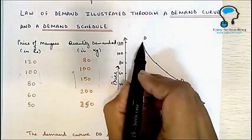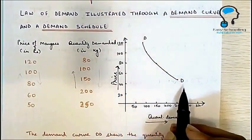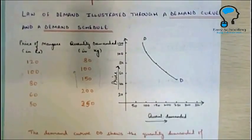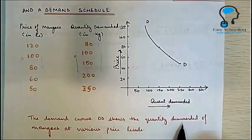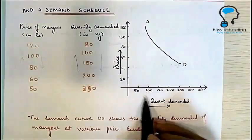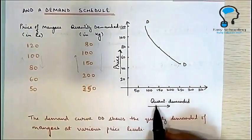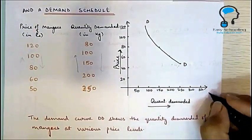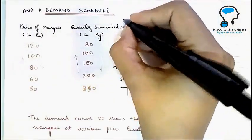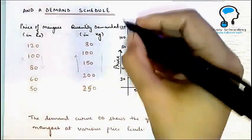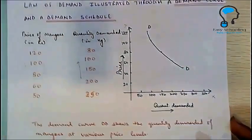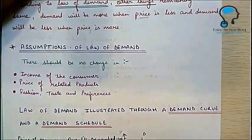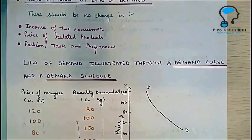This is illustrated in the demand curve. The demand curve is downward sloping to the right. The demand curve DD shows the quantity demanded of mangoes at various price levels. We have taken quantity demanded on the x-axis and price level on the y-axis.